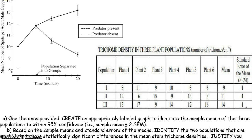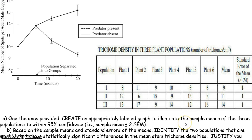However, they also tell you that the standard error of the mean for each population is 1. When you actually graph this, the task said: create an appropriately labeled graph to illustrate the sample means of the three populations with 95% confidence — meaning within two standard errors of the mean. So they wanted you to graph that average of 9, but then make that little eye showing the actual range was between 7 and 11. For the second population, that range would have been between 9 and 13. And for the third, the average would have been between 12 and 16.